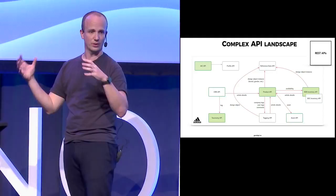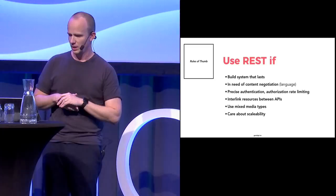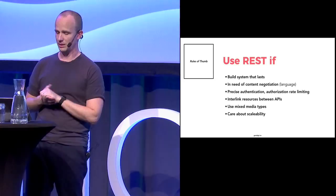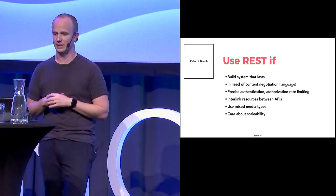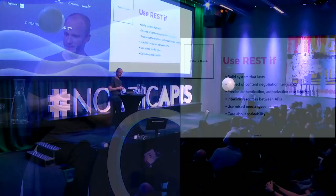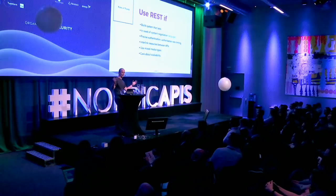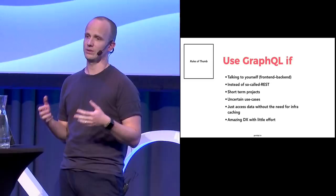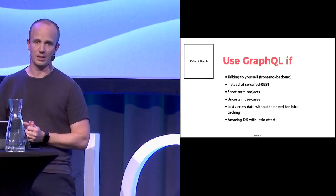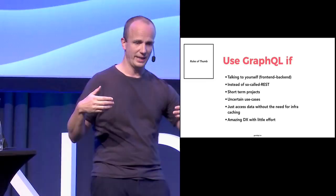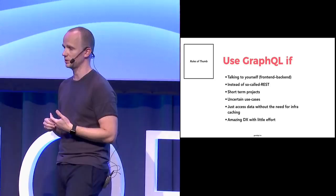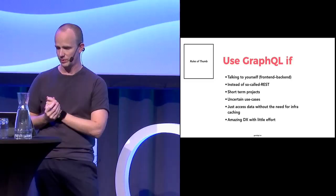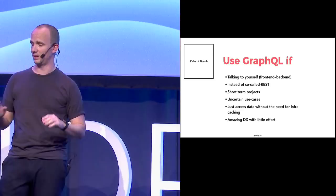Conclusion: use REST if you want to build a system that lasts, if you need content negotiation, precise authorization and authentication, rate limiting, interlinking of APIs, mixed media types, or if you care about scaling and will have many components. Use GraphQL if you are talking to yourself — back-end/front-end scenarios — or instead of so-called REST, for short-term projects, uncertain use cases where you need to iterate, or when you want to provide data access without needing infrastructure caching, or when amazing developer experience with little effort is a priority. And please: don't build so-called REST APIs. Always pick based on your own constraints, not somebody else's, because you are unique.